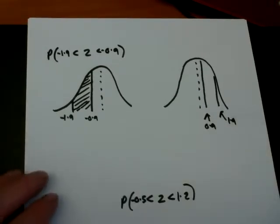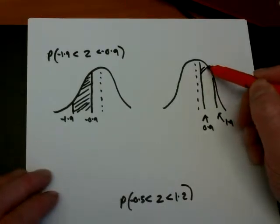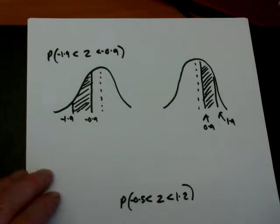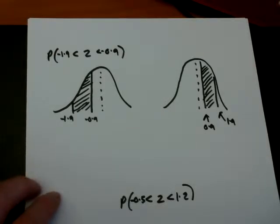Right, so, well, by symmetry, we are exactly the same. The probability that I'm between two negative values is exactly the same as the probability that I'm between the corresponding positive values.